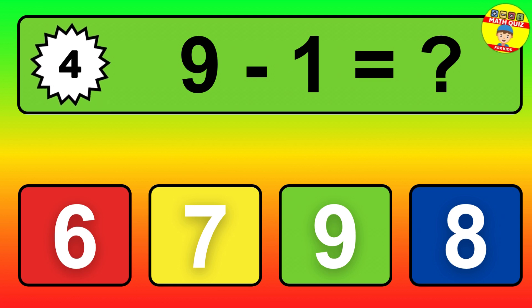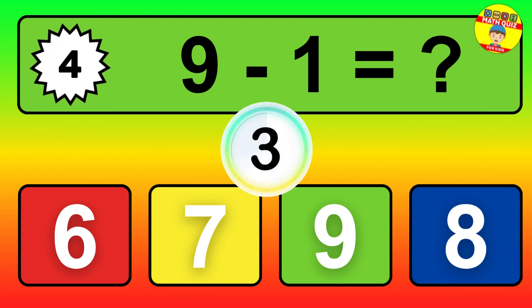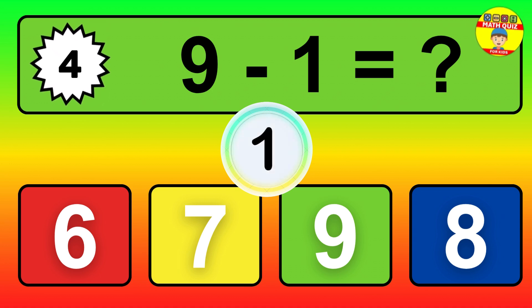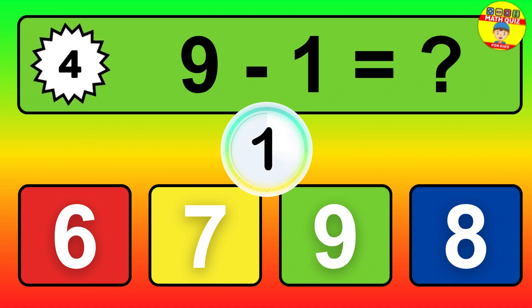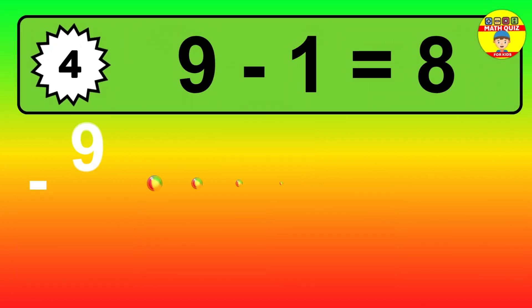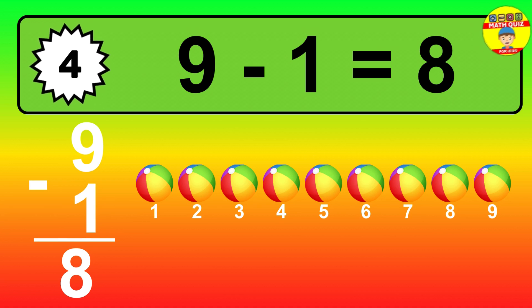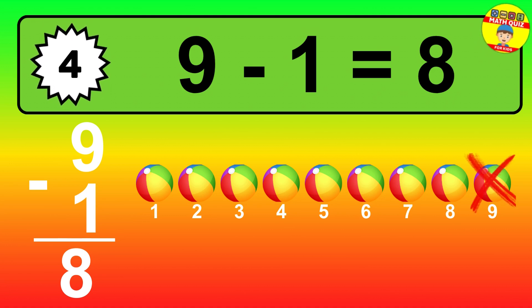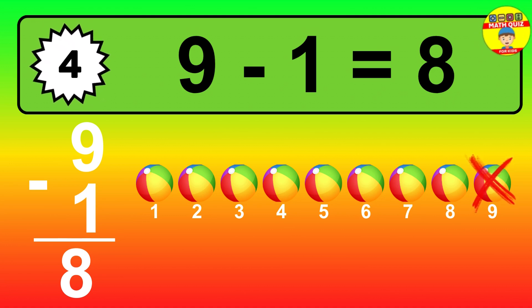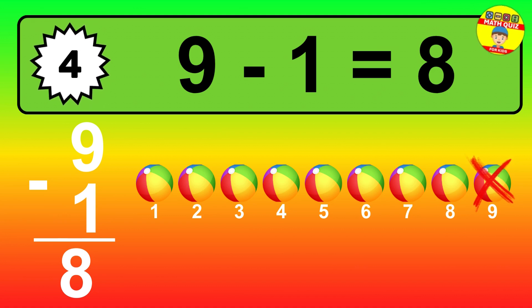Question 4. 9 minus 1 equals what? So the answer is 9 minus 1 is 8. Let's count it. 1, 2, 3, 4, 5, 6, 7, 8.